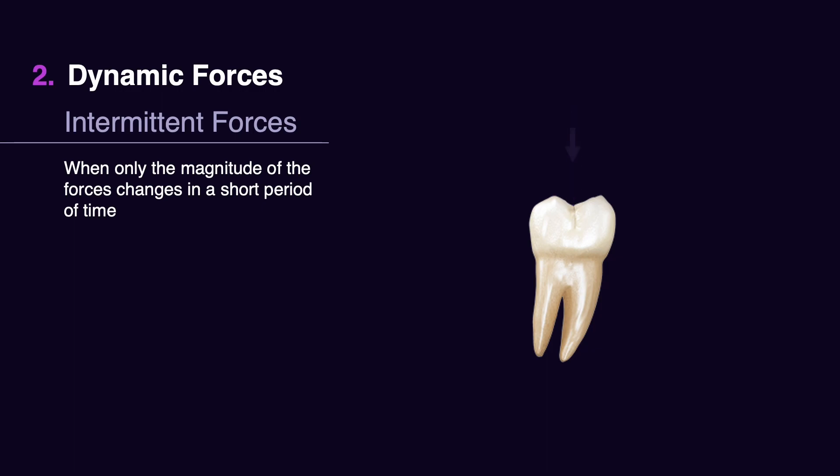Intermittent forces are forces that we apply to biological targets while keeping the direction the same. The magnitude of the forces changes quickly from zero to the applied amount, or from minimum to maximum — not necessarily zero — but the magnitude changes without changing the direction. For example, it's like applying an impact force on the occlusal surface of the tooth, such as occlusal function. The tooth, during a short period of occlusion, is exposed to the same magnitude of force several times. However, the direction stays the same — that is the intermittent force.